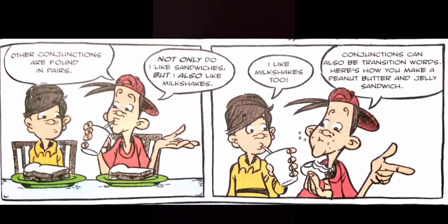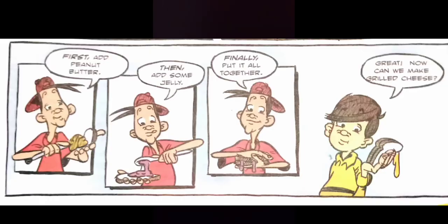Conjunctions can also be transition words. Here's how you make a peanut butter and jelly sandwich. First, add peanut butter, then add some jelly. Finally, put it all together. Now, can we make grilled cheese?